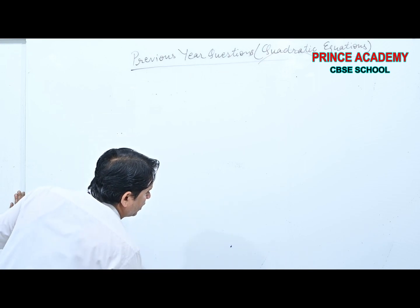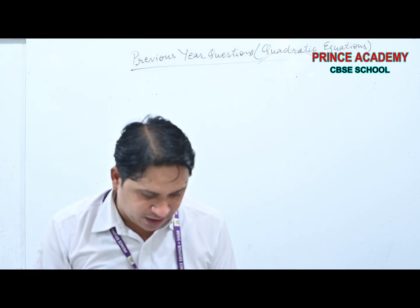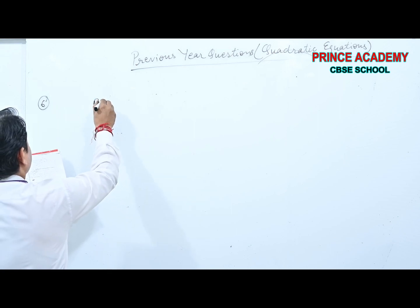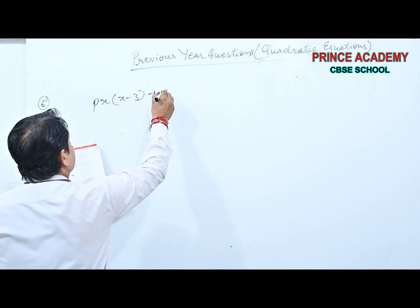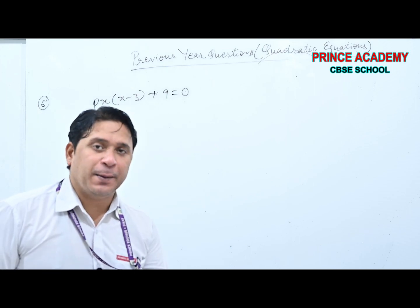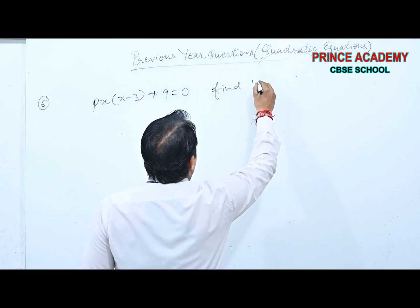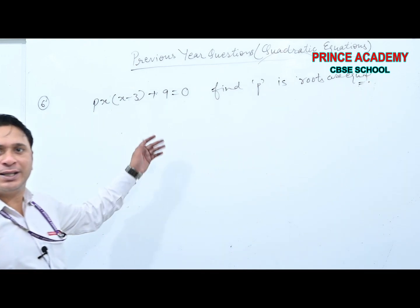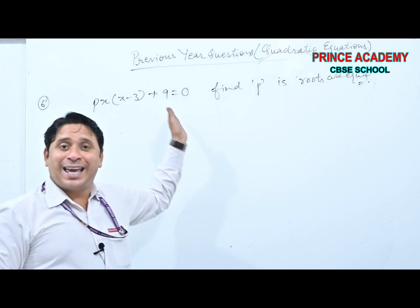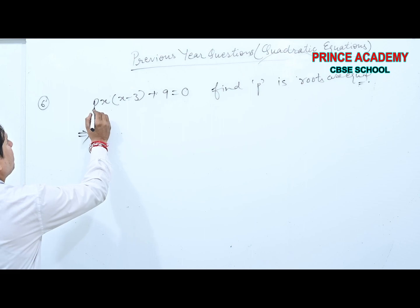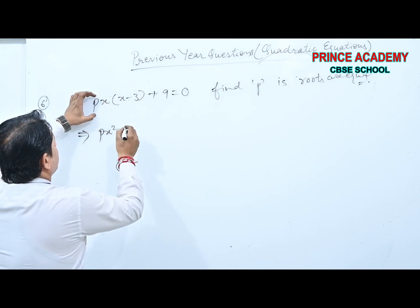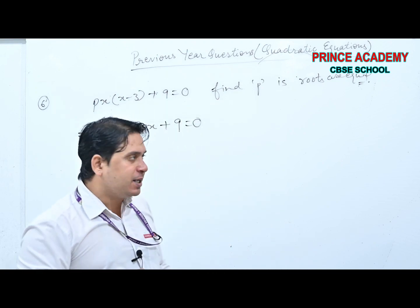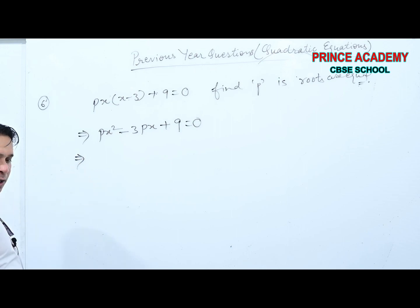Question 6: Px(x−3) + 9 = 0. Find P if roots are equal. First give it the standard form: Px² − 3Px + 9 = 0. Comparing: A = P, B = −3P, C = 9. Since roots are equal, D = B²−4AC = 0.